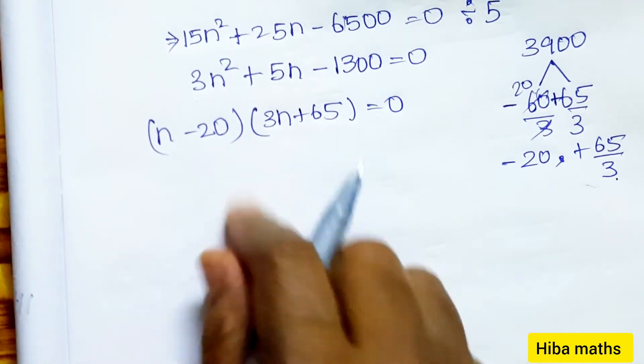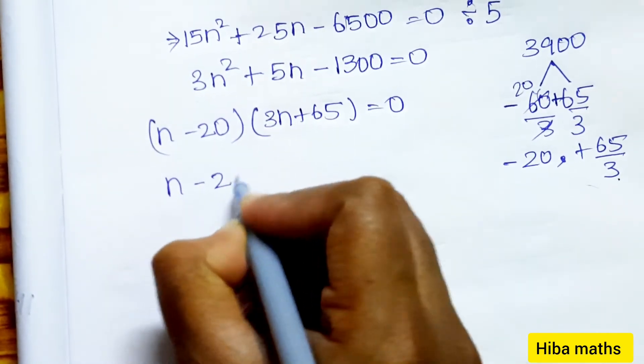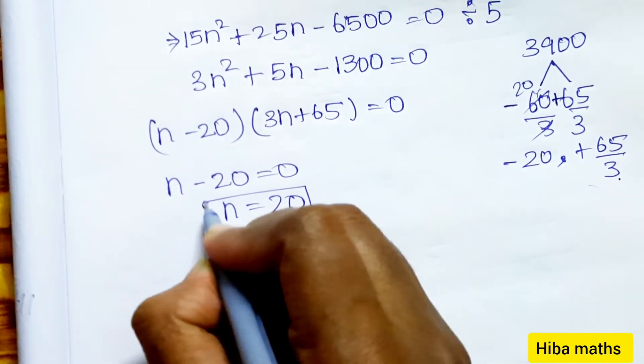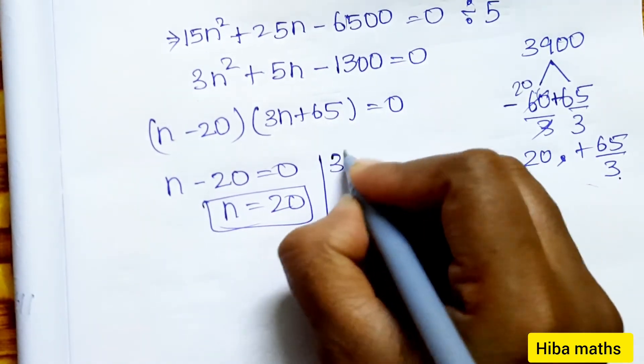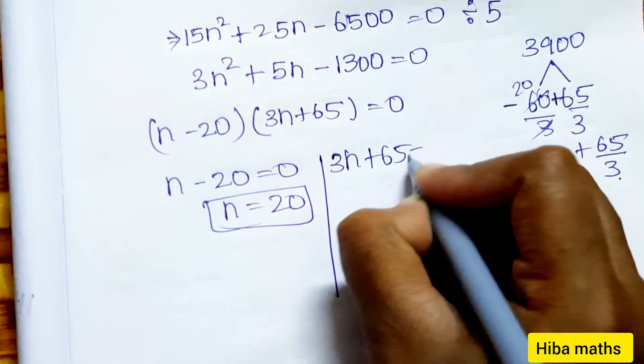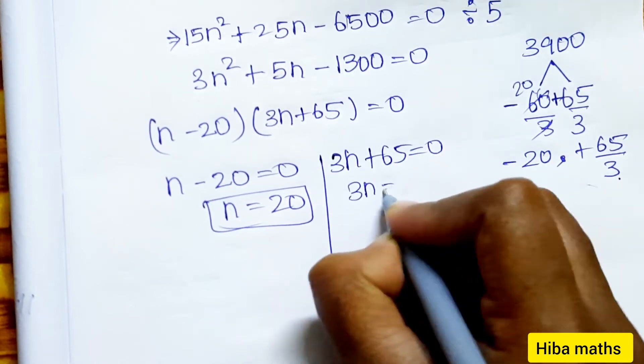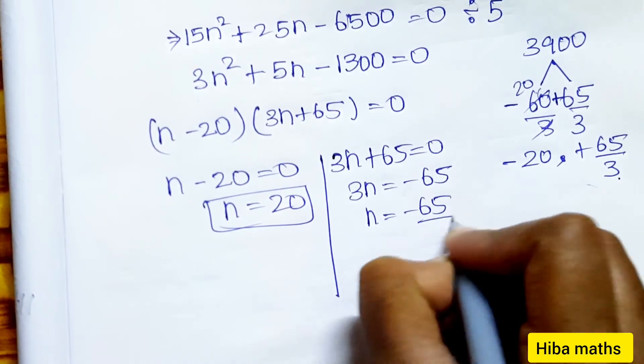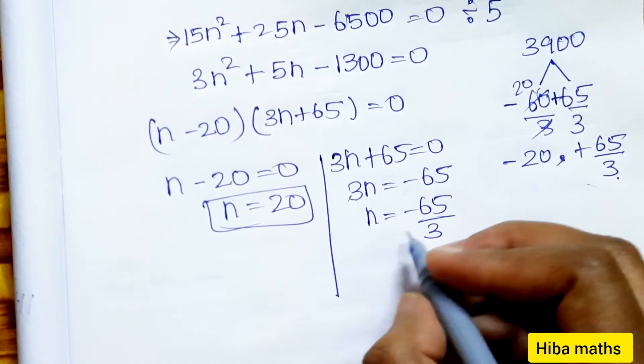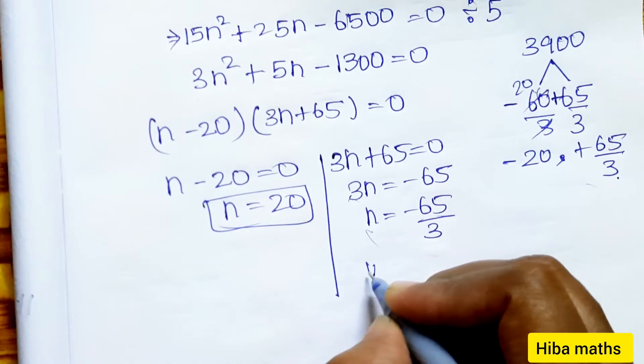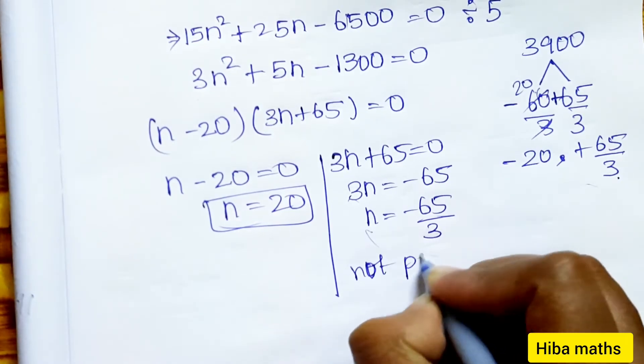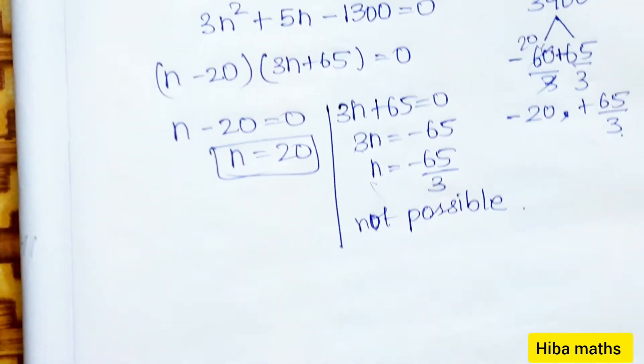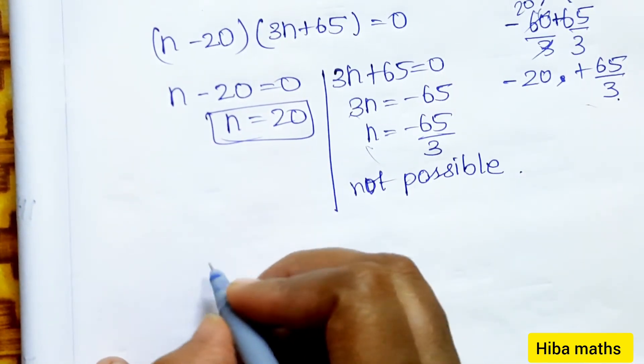So either n - 20 = 0, giving n = 20, or 3n + 65 = 0, giving n = -65/3. Since n cannot be negative, n = 20 is the valid solution.